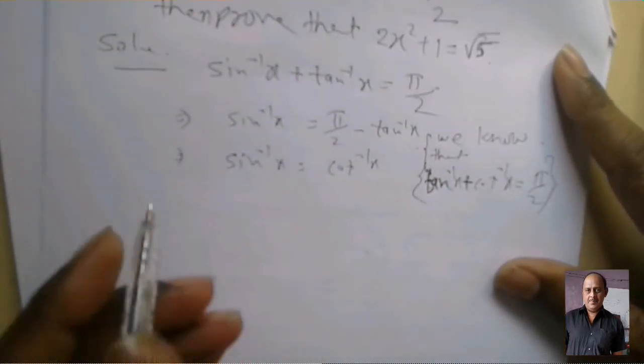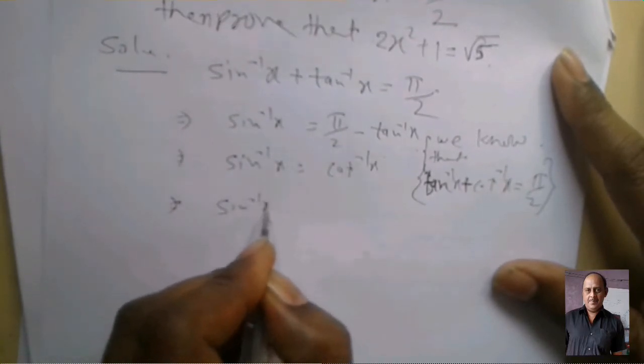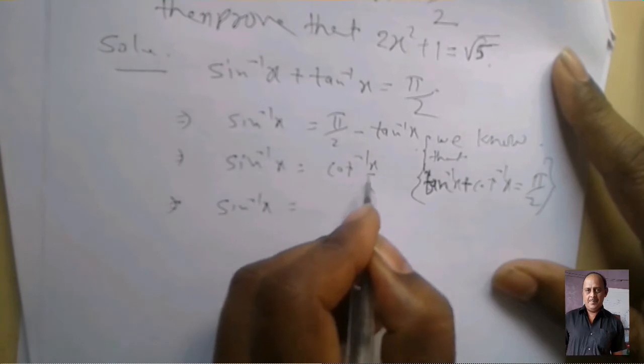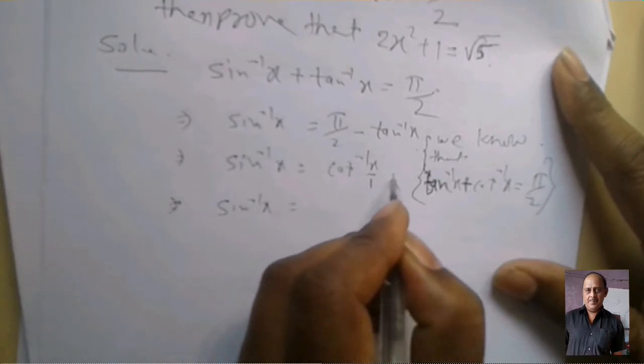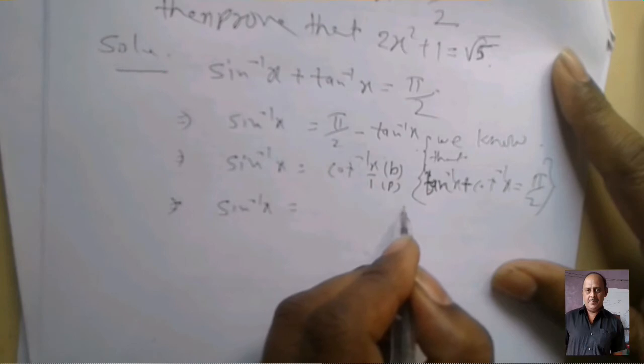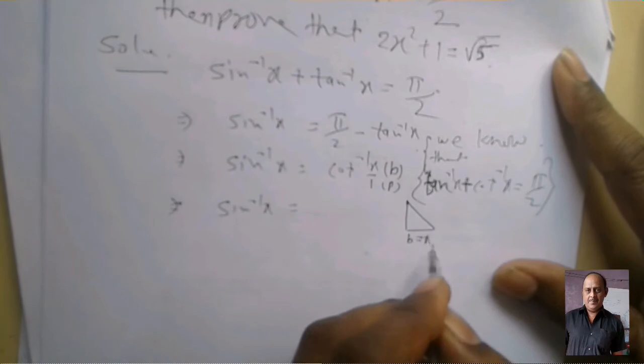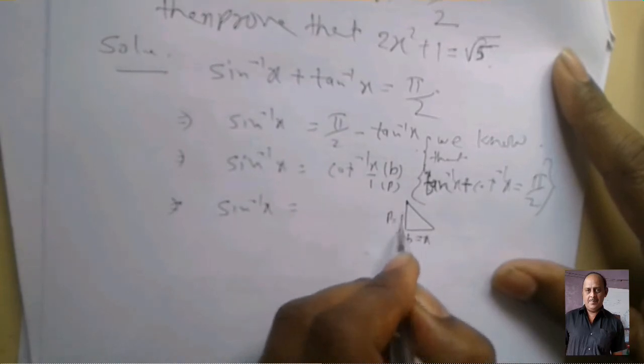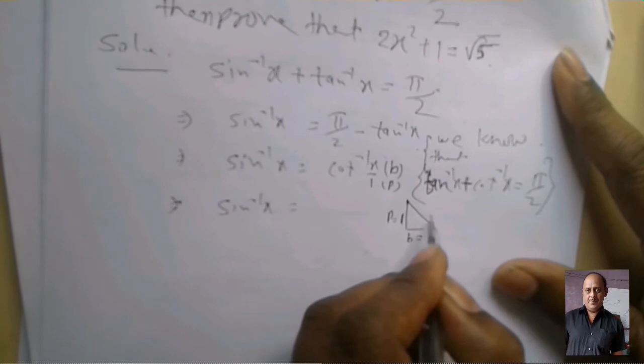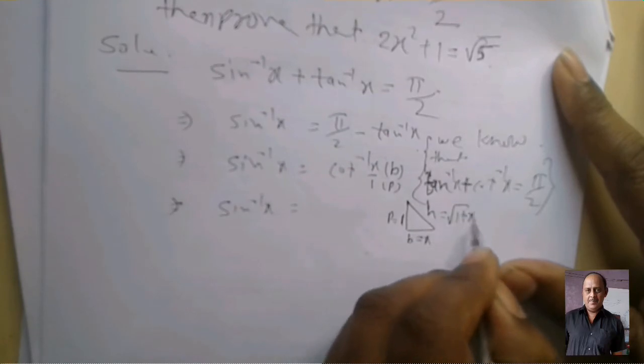Now sin inverse x equal cot inverse x upon 1. Here base upon perpendicular, so base equal x, perpendicular equal 1, then hypotenuse equal root 1 plus x².